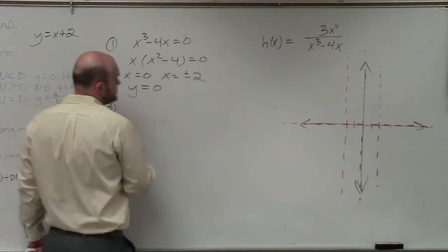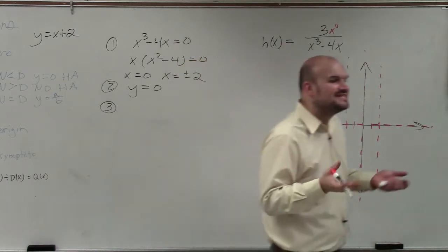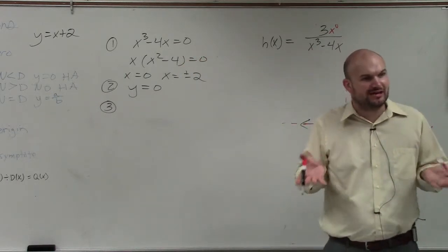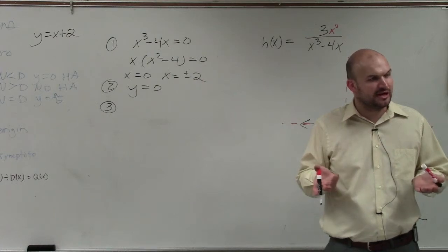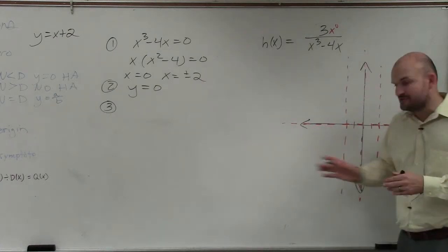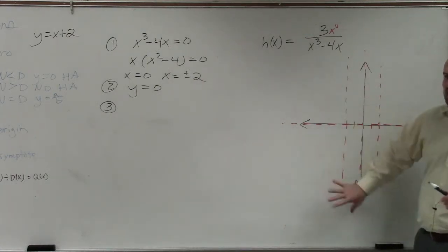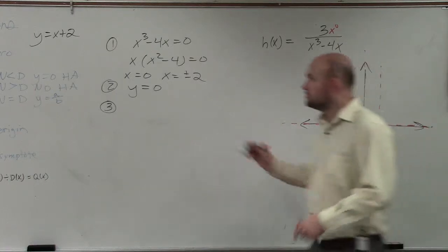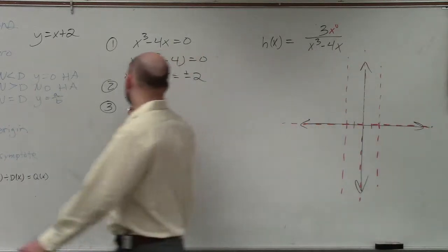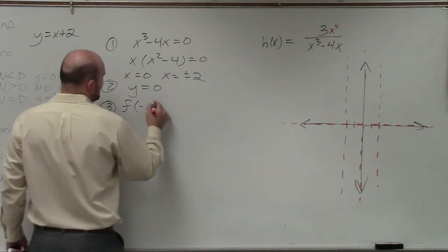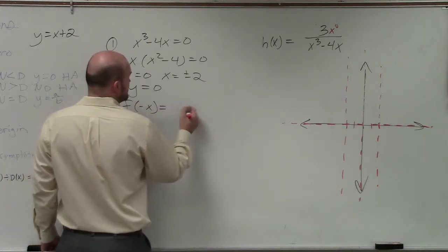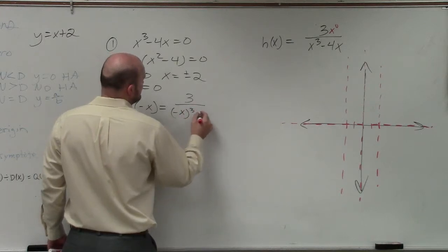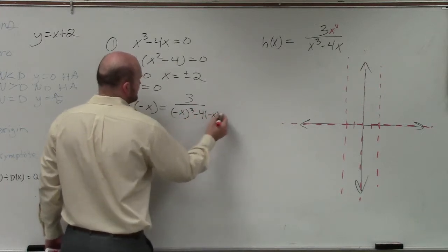The next step is to check for symmetry, which is the same as what we did with even and odd functions. What's nice about checking for symmetry is if you know you have symmetry, all you need to do is graph one side and then reflect it. To check for symmetry, we evaluate f of negative x, which gives us 3 over negative x cubed minus 4 times negative x.